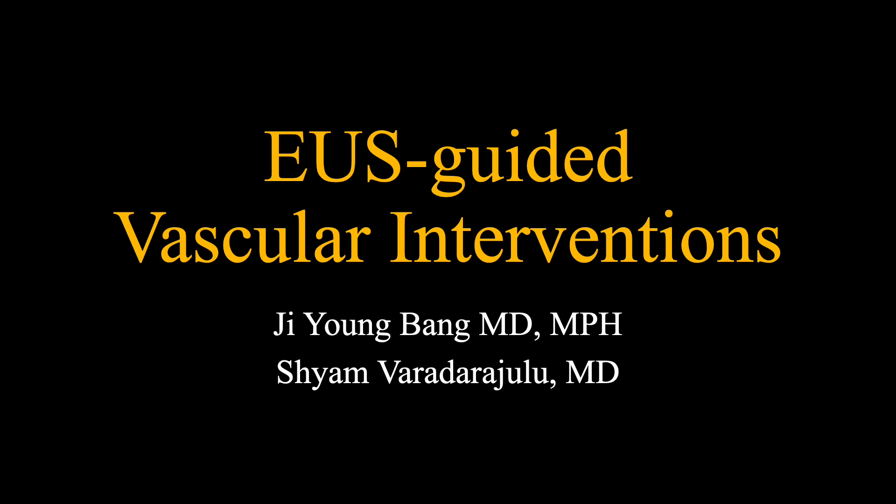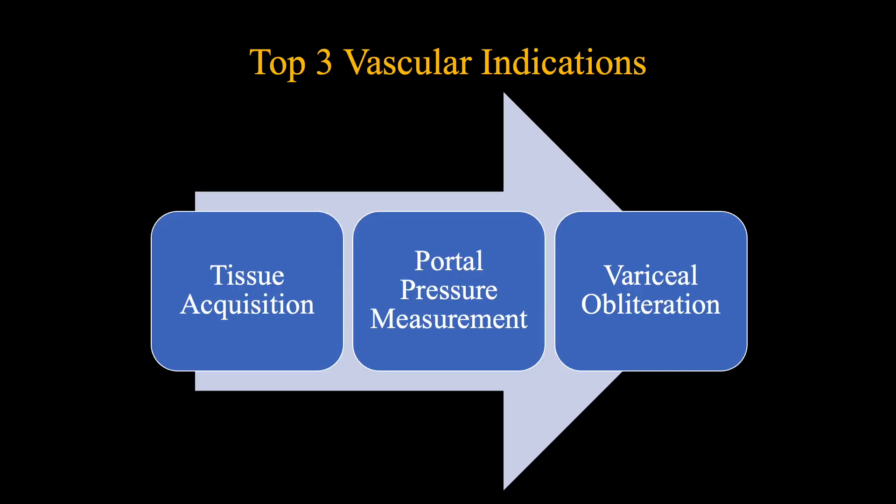We are pleased to present this EUS Masterclass on Vascular Interventions, a novel indication for EUS that is gaining increasing popularity. Although there are several reports on vascular applications of EUS, the three most commonly encountered scenarios include tissue acquisition via intervening vasculature or tissue acquisition of the mass within the vasculature such as tumor thrombi, measurement of portal pressure gradient, and finally, obliteration of large gastric varices, either electively or emergently.